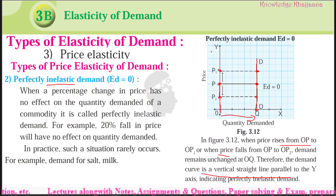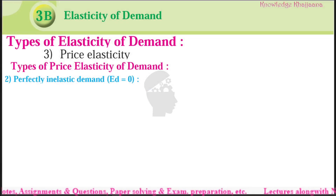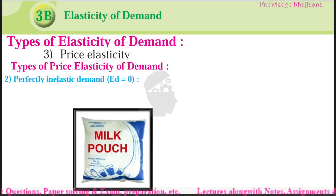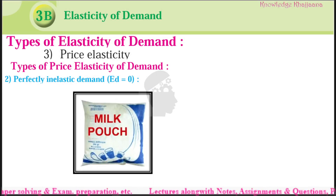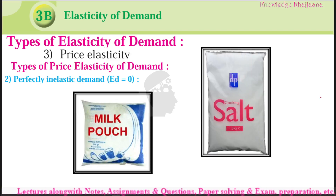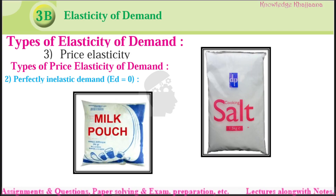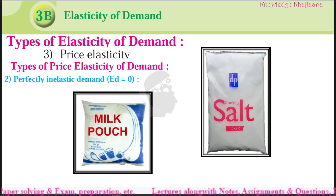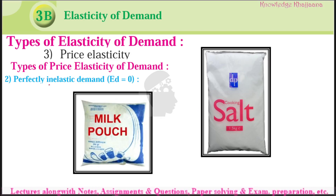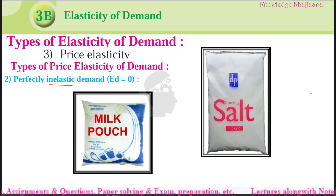The quantity demanded is remaining inelastic — not flexible, not responsive, not stretchy. If you join these equilibrium points, we will get a straight vertical line which is parallel to the Y-axis. This vertical line parallel to Y-axis indicates perfectly inelastic demand. The examples for this are milk pouch, demand for milk, demand for salt — which remains same whether the price increases or decreases, because these are necessity goods.